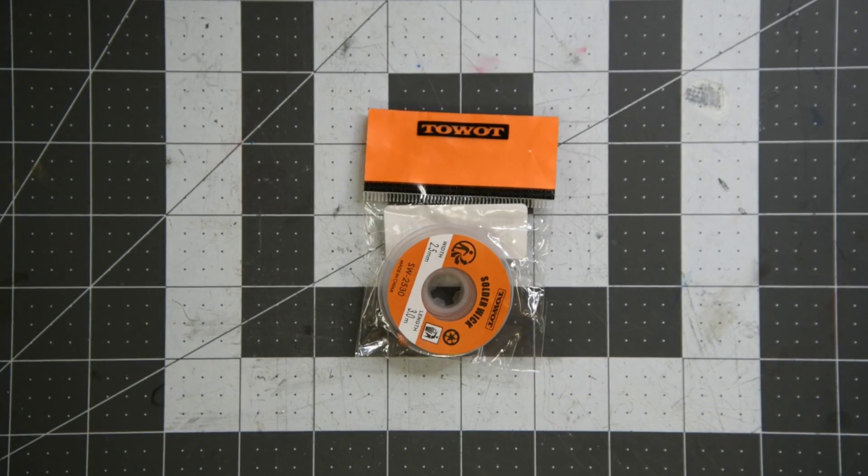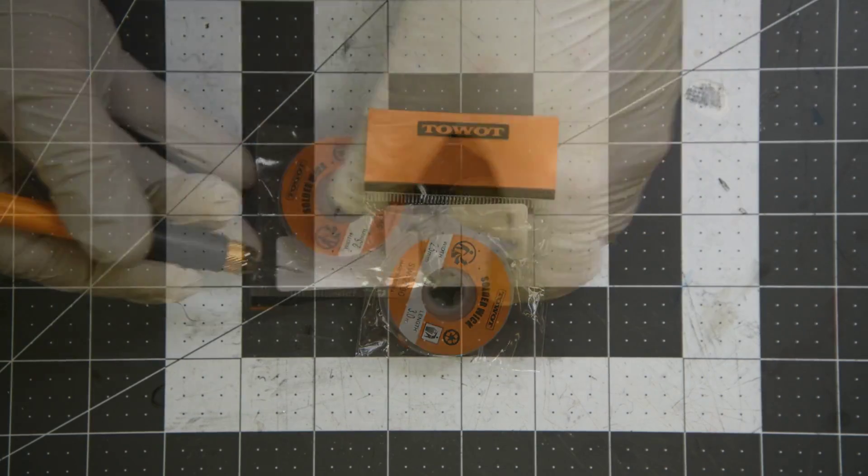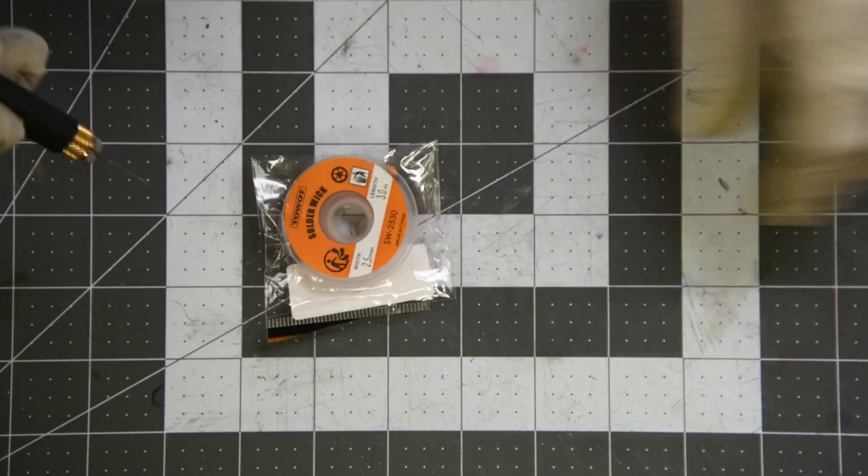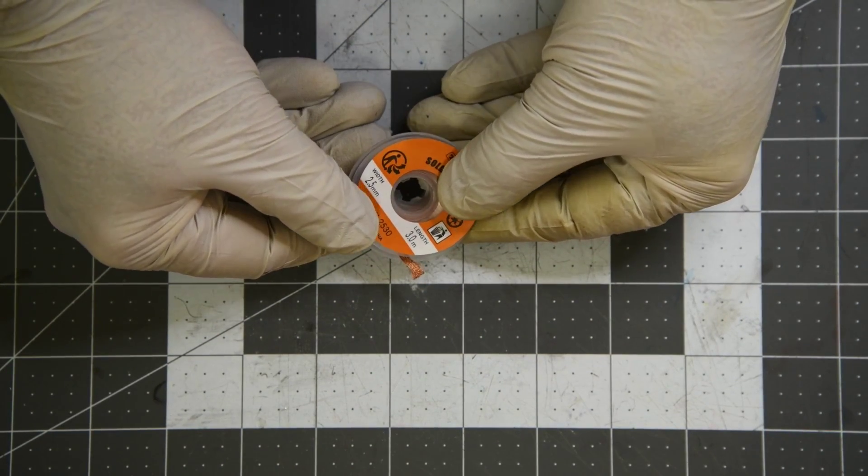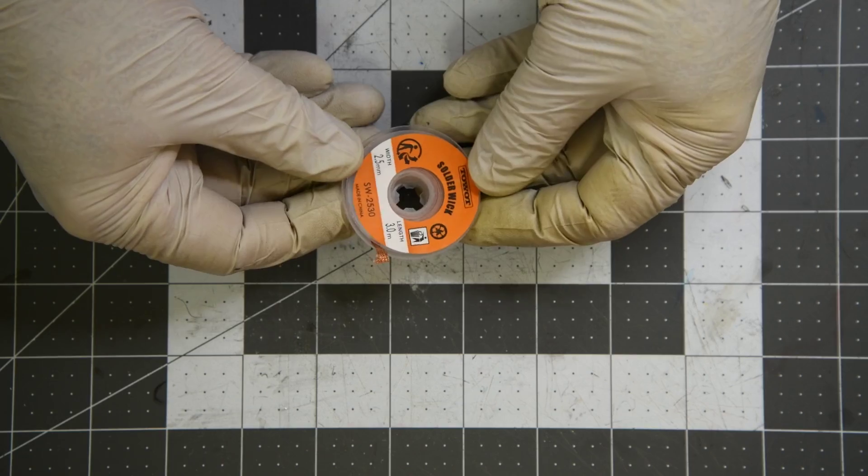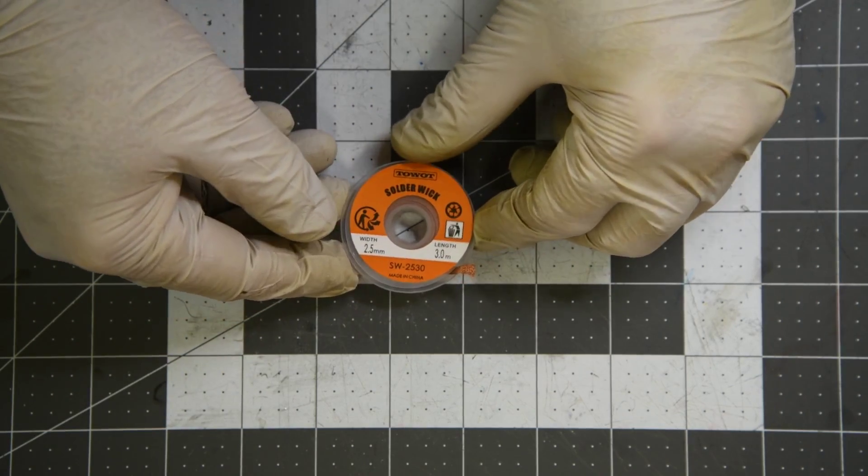Now here's the TOWOT brand wick. It also is made in China, but the brand is printed on the product. Doesn't make it a better solder wick, just wants me to think that. This is a 9.8 foot spool at 61.1 cents a foot.